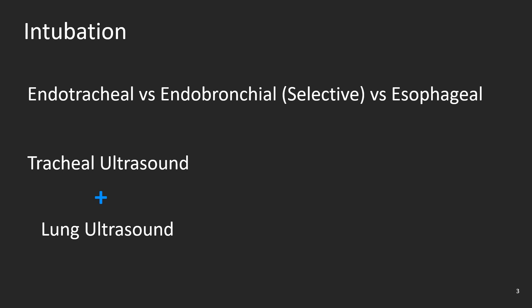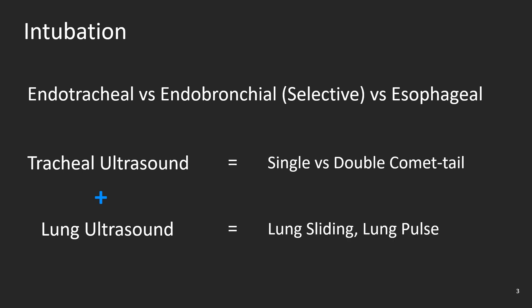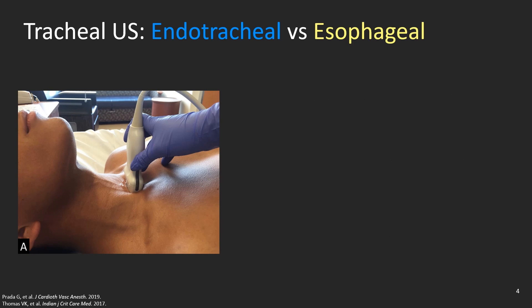With tracheal ultrasound we will look for the single or double comet tail images. With lung ultrasound we will look for lung sliding and lung pulse. That's all we need. Tracheal ultrasound will tell you if the tube is in the trachea or the esophagus. Ideally you should start scanning before intubating the patient and maintain a good image during and after intubation. Place the linear high frequency probe just above the suprasternal notch perpendicular to the trachea on a transverse orientation.